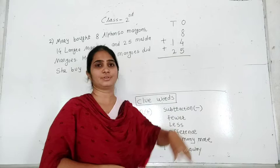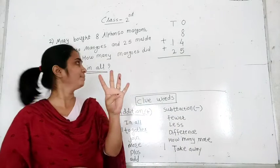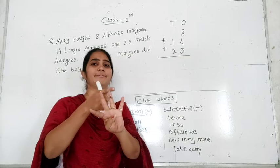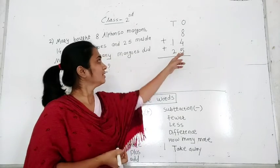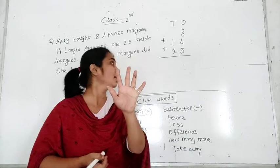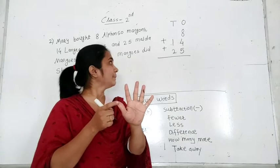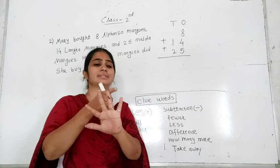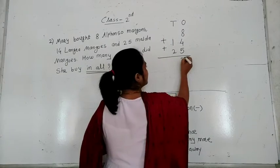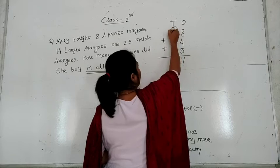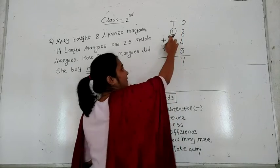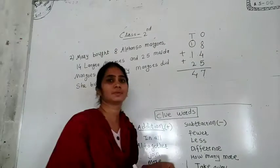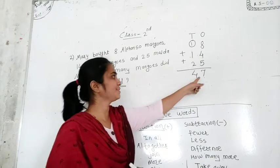Now we do the addition. First 8 plus 4: we count 4 fingers starting from 9 — 9, 10, 11, 12. Then 12 plus 5: we count 5 fingers — 13, 14, 15, 16, 17. So I write 7 here. And 1 carries to the tens column. Then 1 plus 1 is 2, and 2 plus 2 is 4. So our answer is 47.